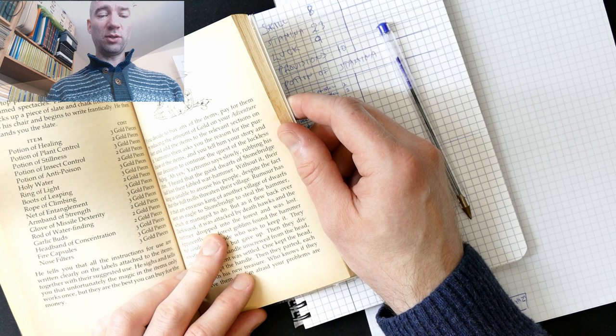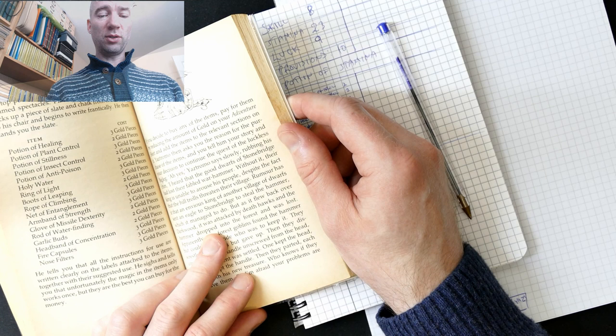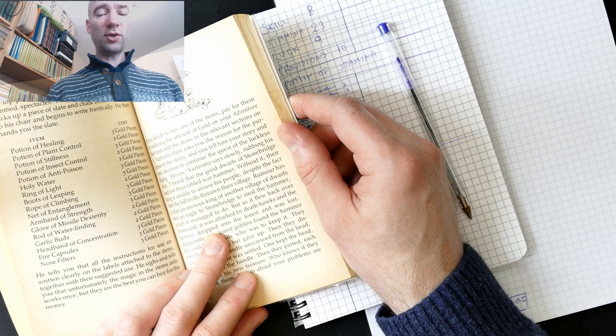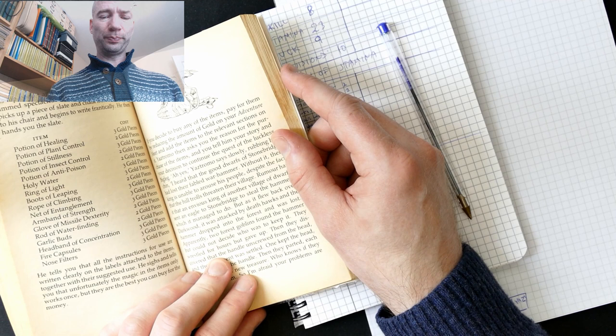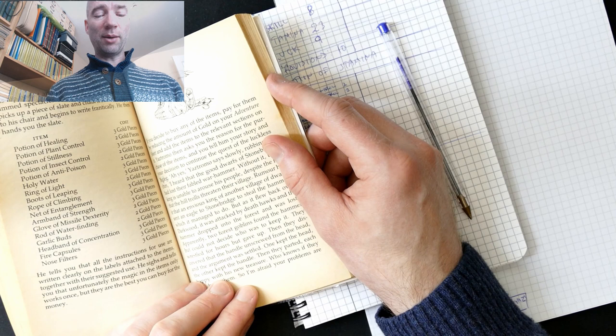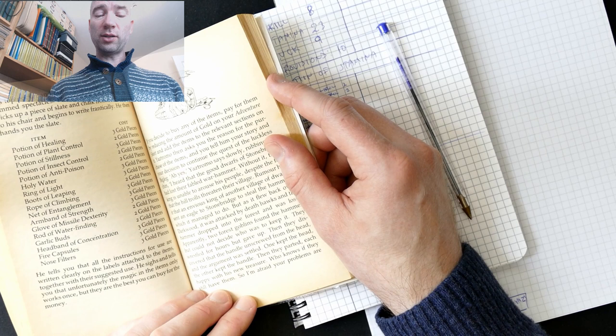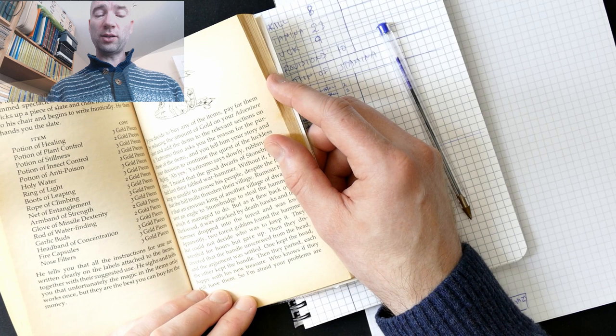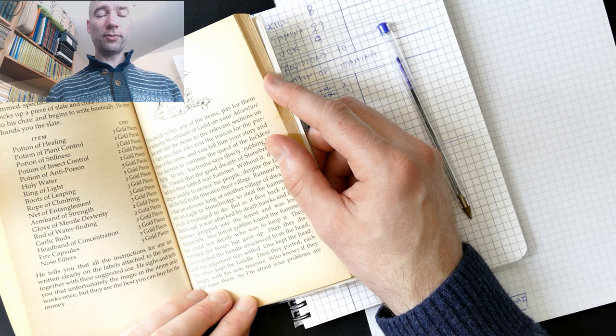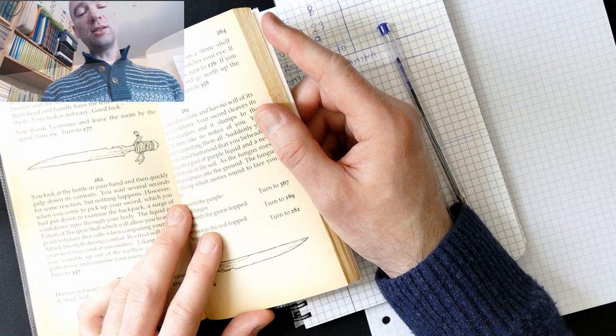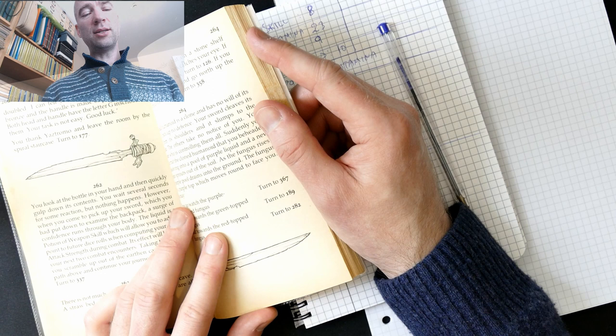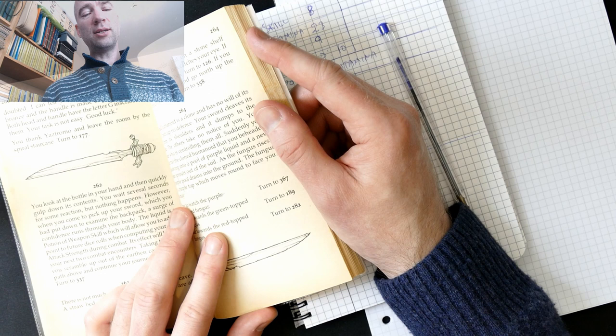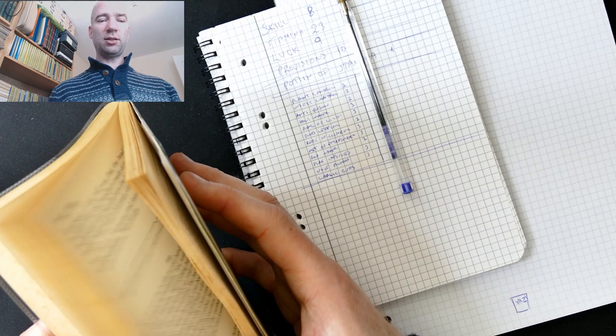I heard that the good dwarves of Stonebridge had lost their fabled warhammer. Without it, their king is unable to arouse his people, despite the fact that the hill trolls threatened their village. Rumour has it that an envious king of another village of dwarves sent an eagle to Stonebridge to steal the hammer, which it managed to do. But as it flew back over Darkwood, it was attacked by Death Hawks, and the hammer dropped into the forest and was lost. Apparently, two forest goblins found the hammer, but could not decide who was to keep it. They wrestled for hours, but gave up. Then they discovered that the handle unscrewed from the head, and the argument was settled. One kept the head, the other kept the handle. Then they parted, each happy with his new treasure. Who knows if they still have them? So, I'm afraid your problems are doubled. I can tell you that the head is made of bronze, and the handle is made of polished ebony. Both head and handle have a letter G inscribed on them. Your task is not easy. Good luck. You thank Yaztromo and leave the room by the spiral staircase. Turn to 177.